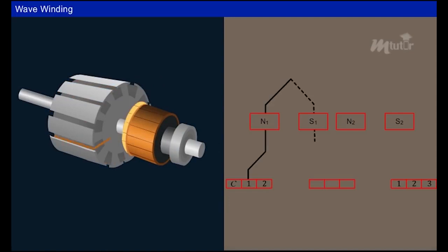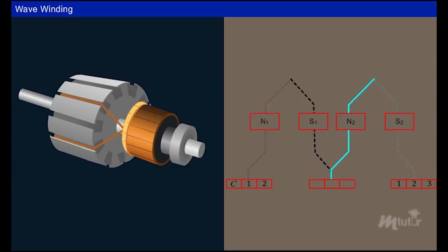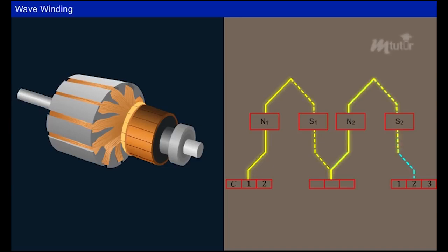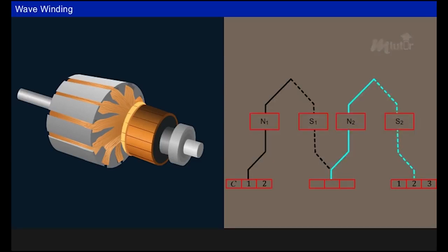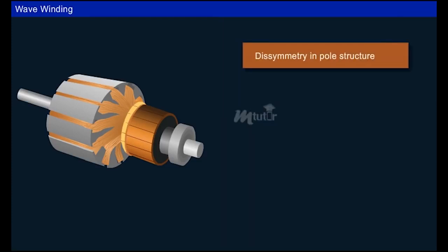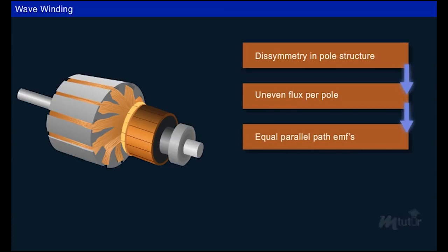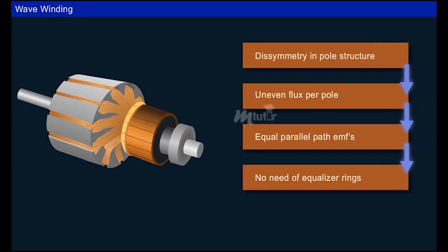Now we shall learn about wave windings. In this type of winding, the completing end of a coil is connected to the starting end of another coil under a different pole pair, moving ahead and avoiding overlapping. The appearance of this coil winding resembles a wave, hence the name wave winding. Regardless of the number of poles, the number of parallel paths is always equal to two. Therefore, even with unequal flux distribution due to asymmetric poles, the EMF in both parallel paths is the same, so no equalizer rings are required.